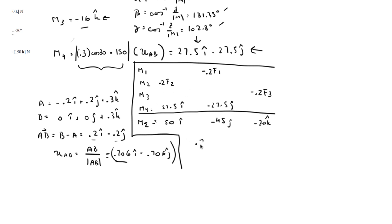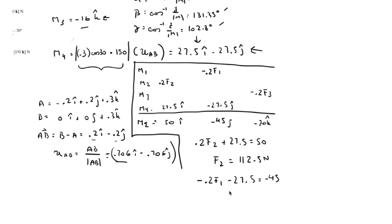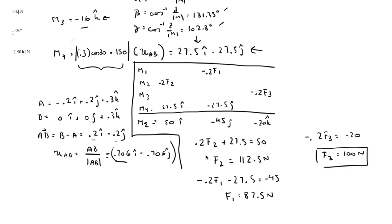In the I direction: 0.2·F2 + 27.5 = 50, so F2 = 112.5 N. In the J direction: −0.2·F1 − 27.5 = −45, so F1 = 87.5 N. In the K direction: −0.2·F3 = −20, so F3 = 100 N. Those are the final answers for F1, F2, and F3.